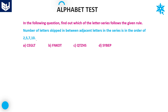Let's move on to the next question. The rule is: the number of letters skipped between adjacent letters in the series is in the order 2, 5, 7, 10. If the number of letters skipped is 2, 5, 7, 10, then the difference between adjacent letters must be 3, 6, 8, 11 — that is, one more than the number of letters skipped. We will check which option satisfies differences of 3, 6, 8, 11.